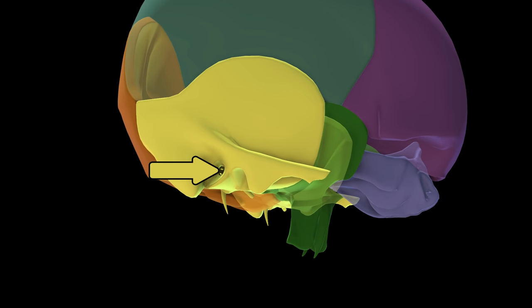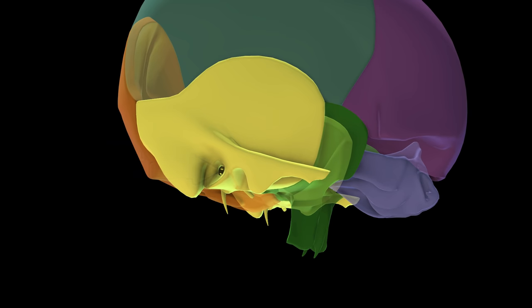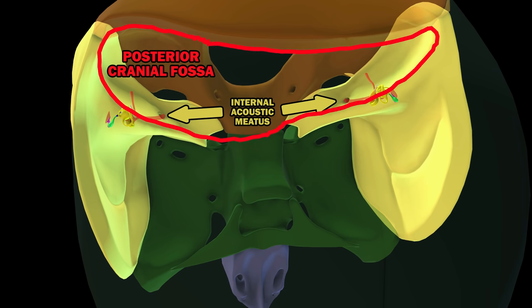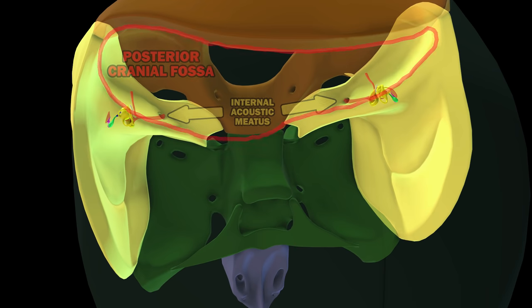The ear canal, which joins the outer and middle ears, is known as the external acoustic meatus. There is also the internal acoustic meatus, which is a tube running from the inner ear to the back of the skull, to what's called the posterior cranial fossa. The three fossae of the skull will be discussed in a later video.